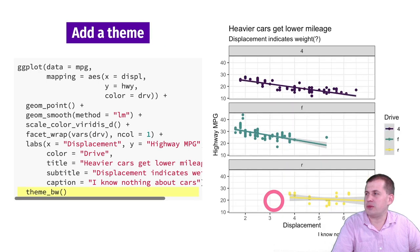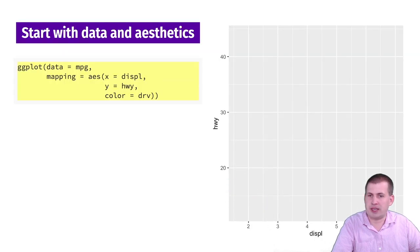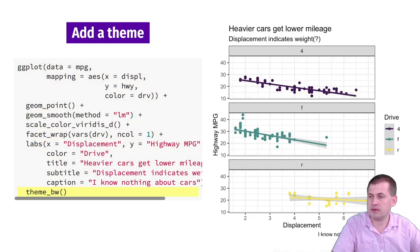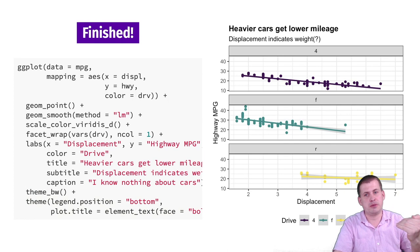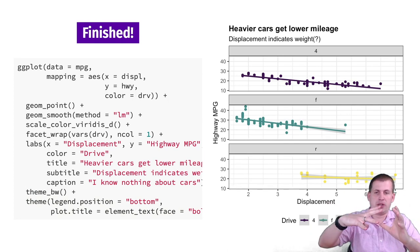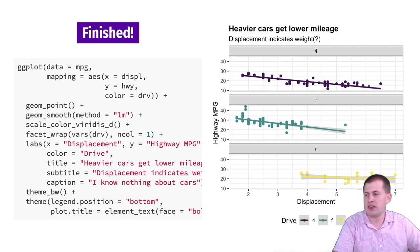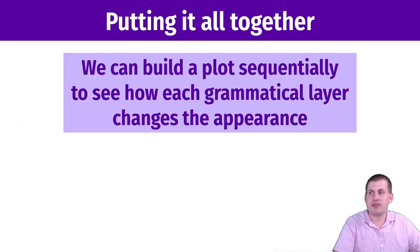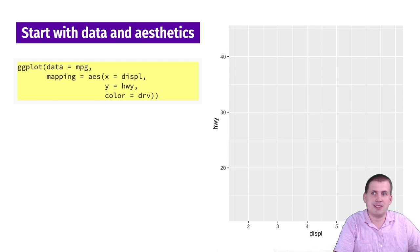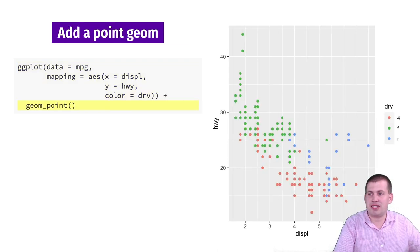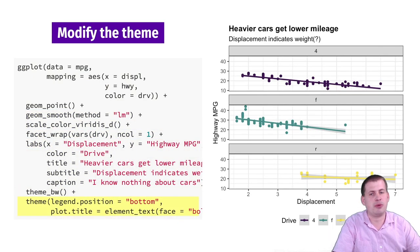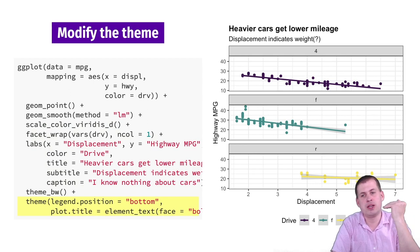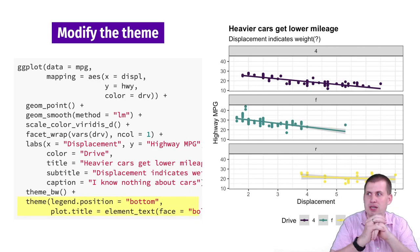We went through that slowly, but we can flip through it like a flip book. We started here and just added layers sequentially — the plot changes, gets enhanced, and improves. Just by adding each layer from the grammar of graphics, it modifies the plot, recolors things, facets things. That's how we create fairly complicated graphs in R. It starts with a blank plot and gets fancier with each new grammar of graphics layer added.